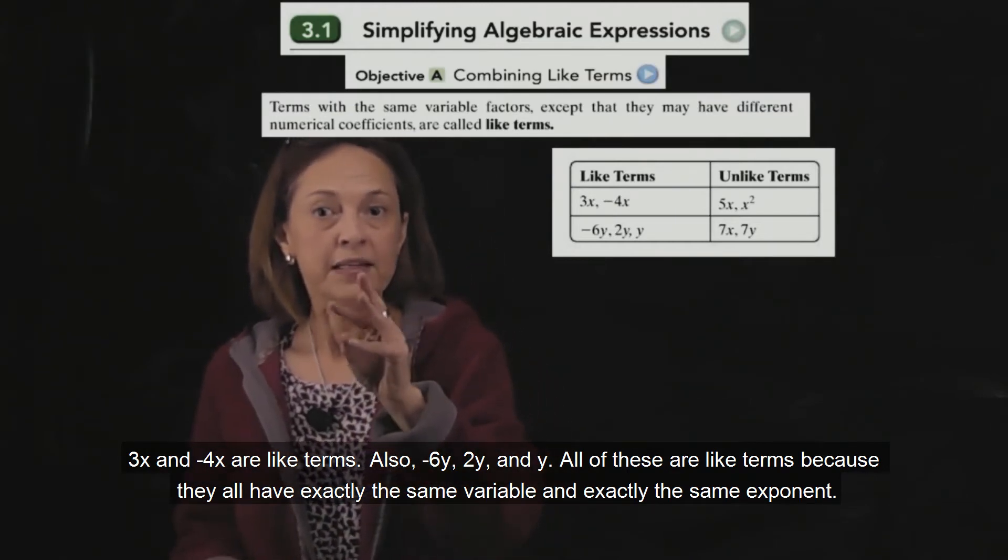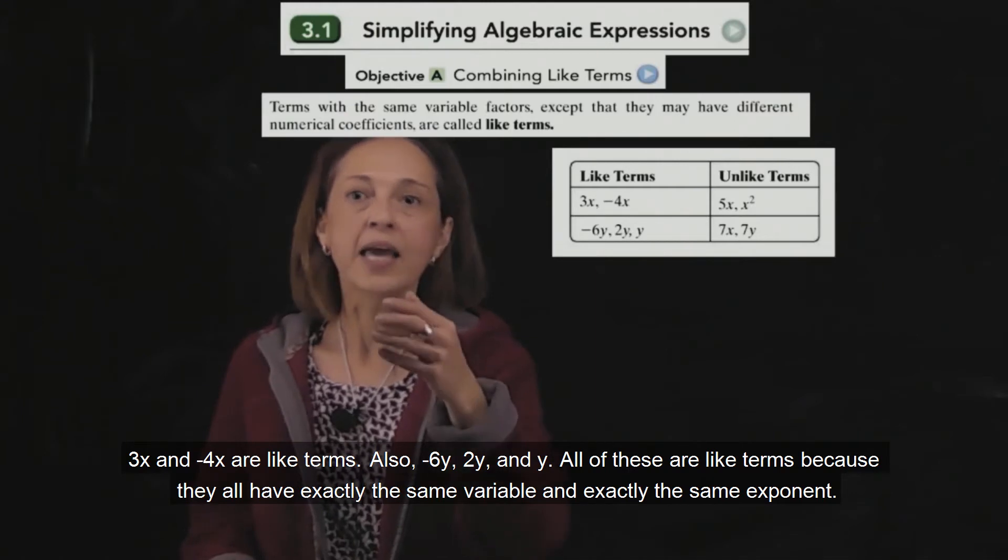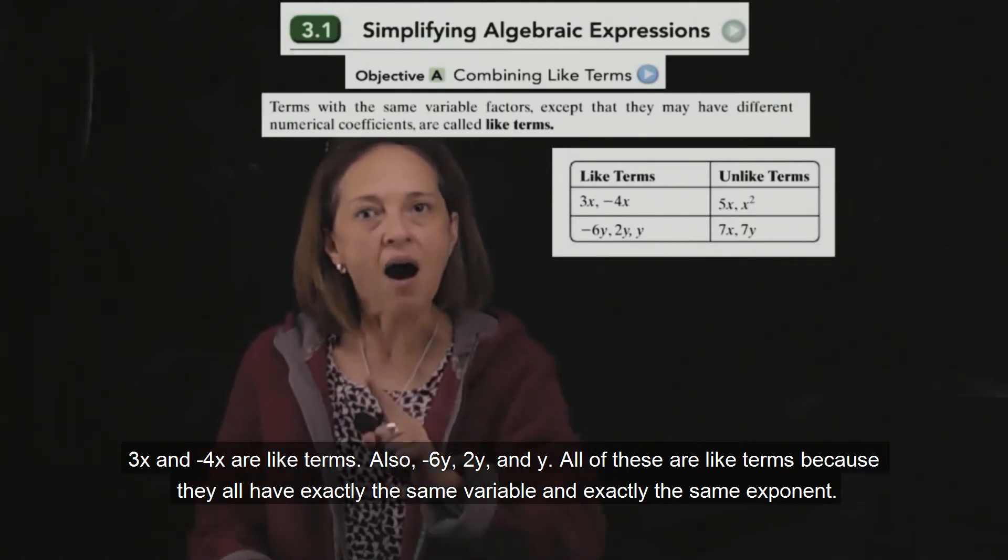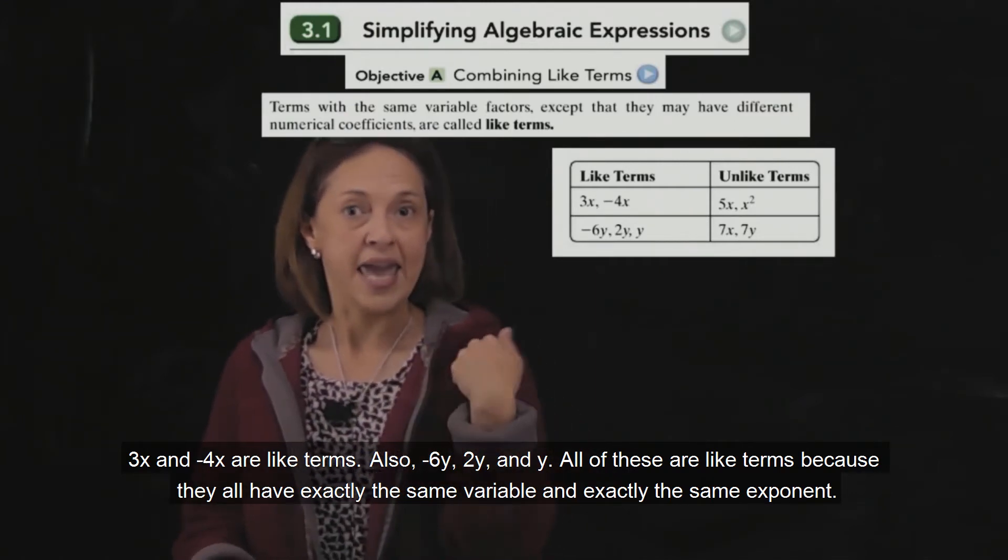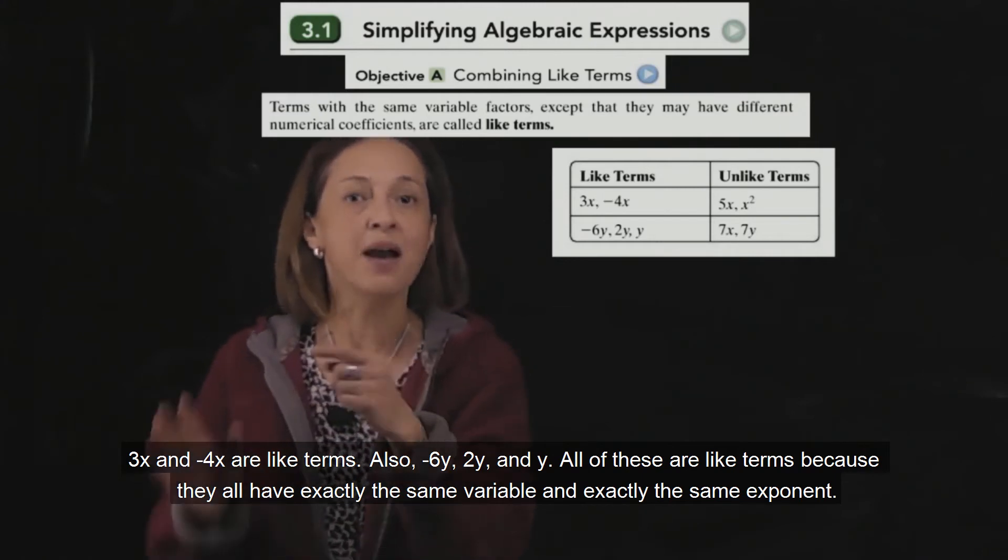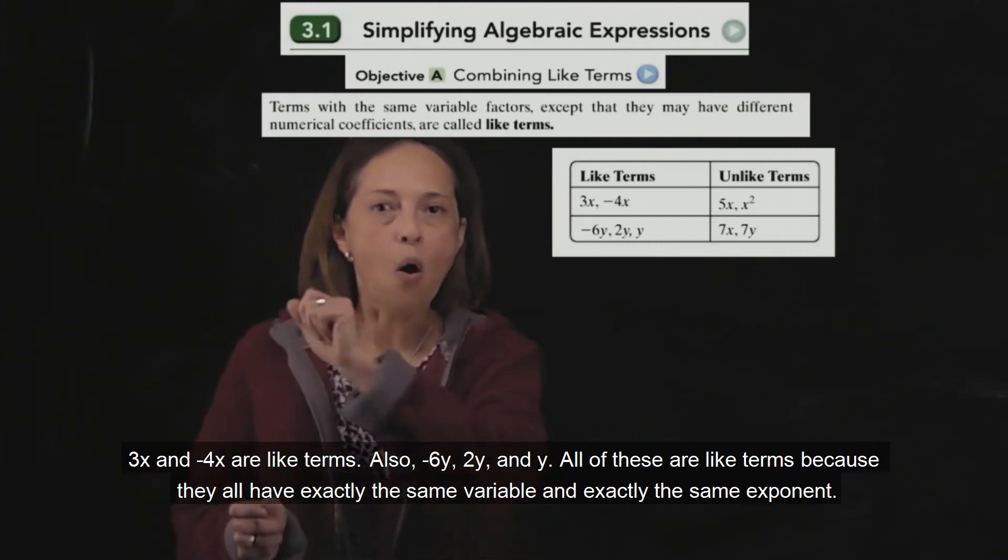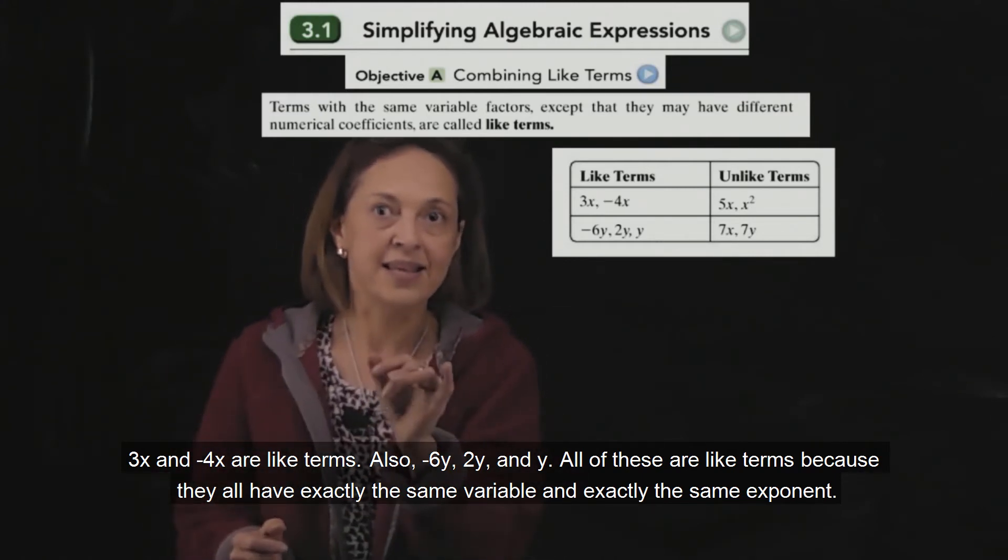Also, negative 6y, 2y, and y all are like terms because they have exactly the same variable and all have exactly the same exponent.